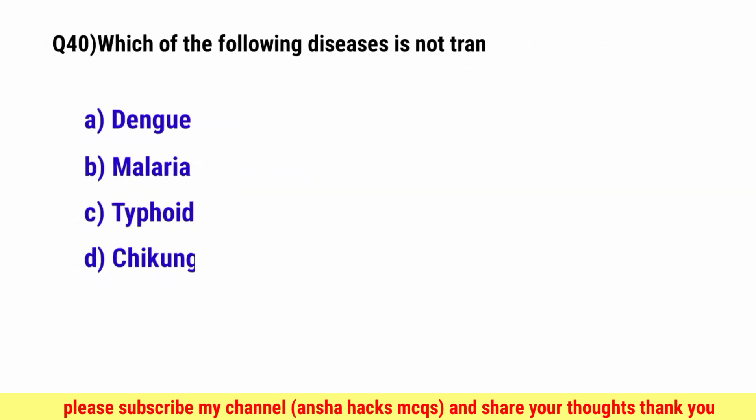Question No. 40. Which of the following disease is not [vector-borne]? The correct option is C, Typhoid.